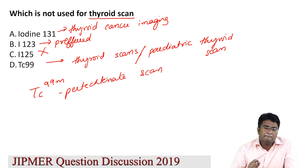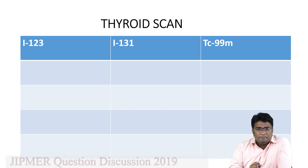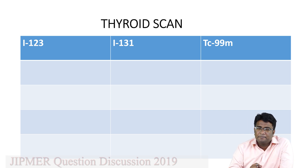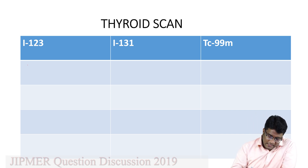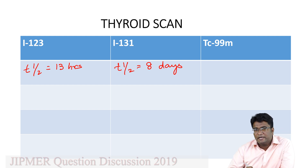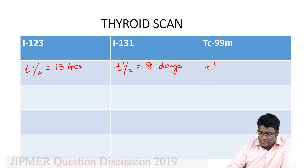Let's compare the isotopes used in thyroid scan: iodine 123, iodine 131, and technetium 99m. Iodine 123 has a half-life of about 13 hours. Iodine 131 has a half-life of 8 days. Technetium 99m has a half-life of about 6 hours.